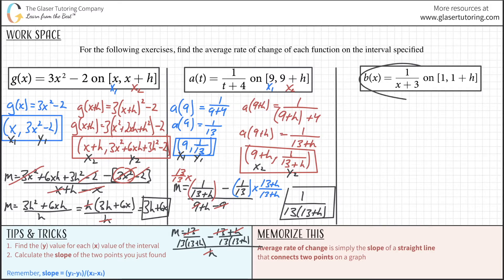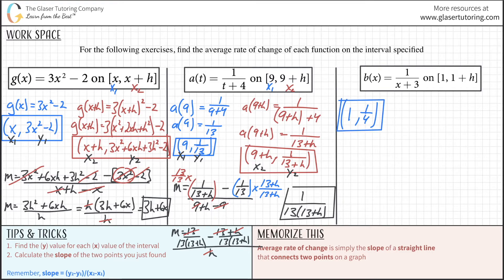Now let's do the last one. I'm going to write the coordinates out without all the intermediate work to save space. Our first x1 value is 1, and the corresponding y value when we plug 1 in for x would be 1/(1+3) = 1/4. So my first point is (1, 1/4). Then taking x2 = 1+h, plugging in for x gives y2 = 1/(1+h+3). Combining 1 and 3 gives 4, so y2 = 1/(4+h).